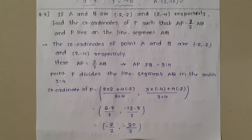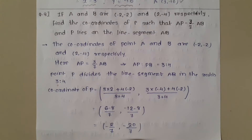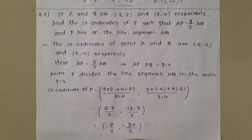Question number 8: If A and B are (-2, -2) and (2, -4) respectively, find the coordinate of P such that AP = 3/7 of AB and P lies on the line segment AB. Here, point P divides line segment AB and AP/AB = 3/7.